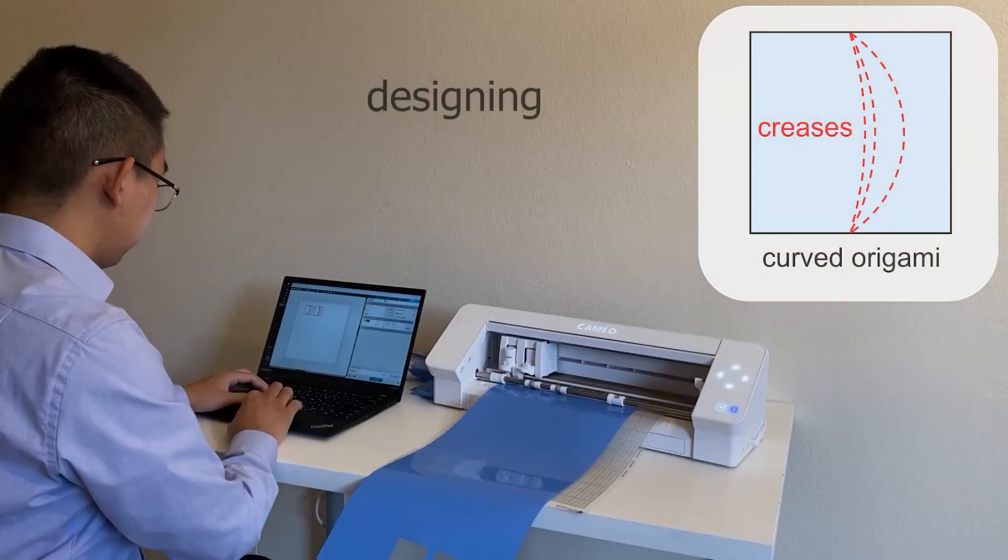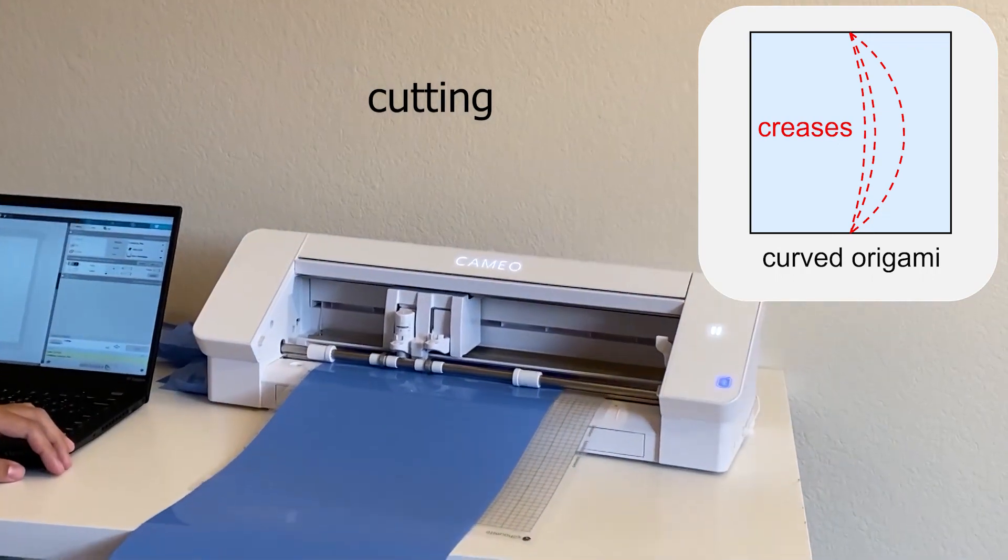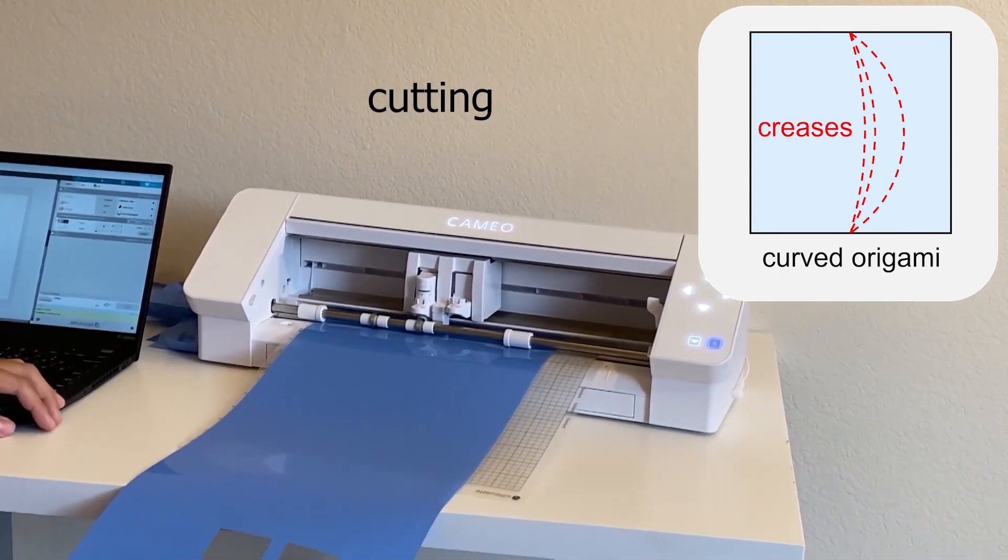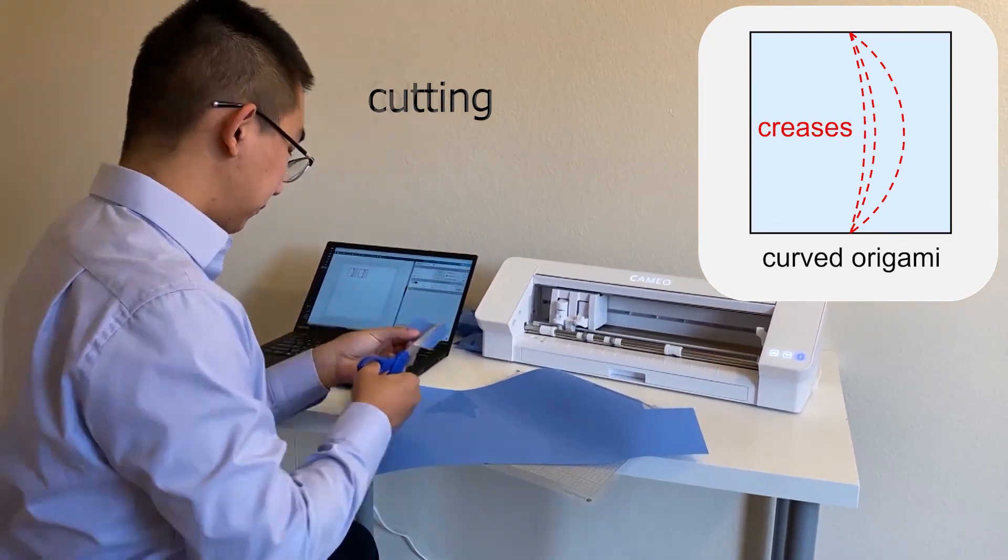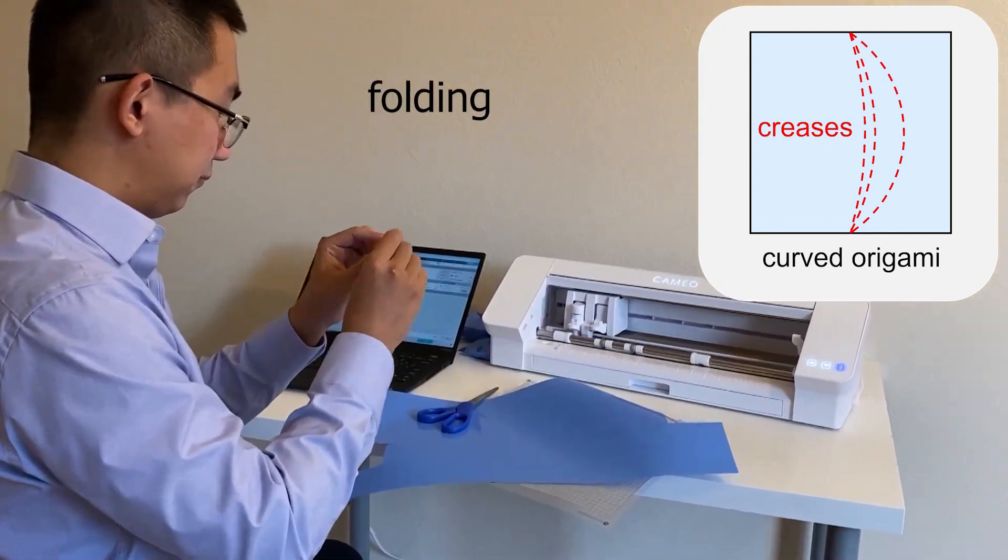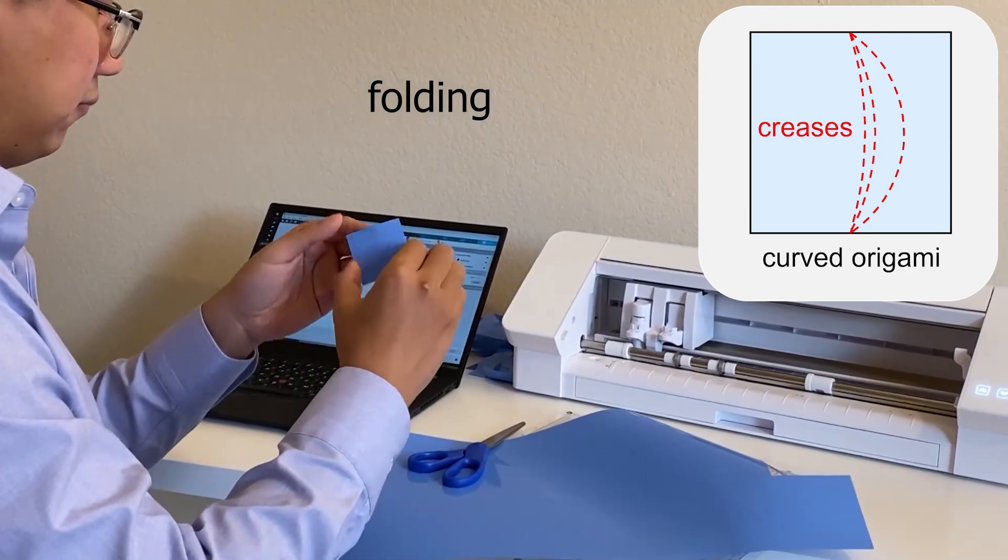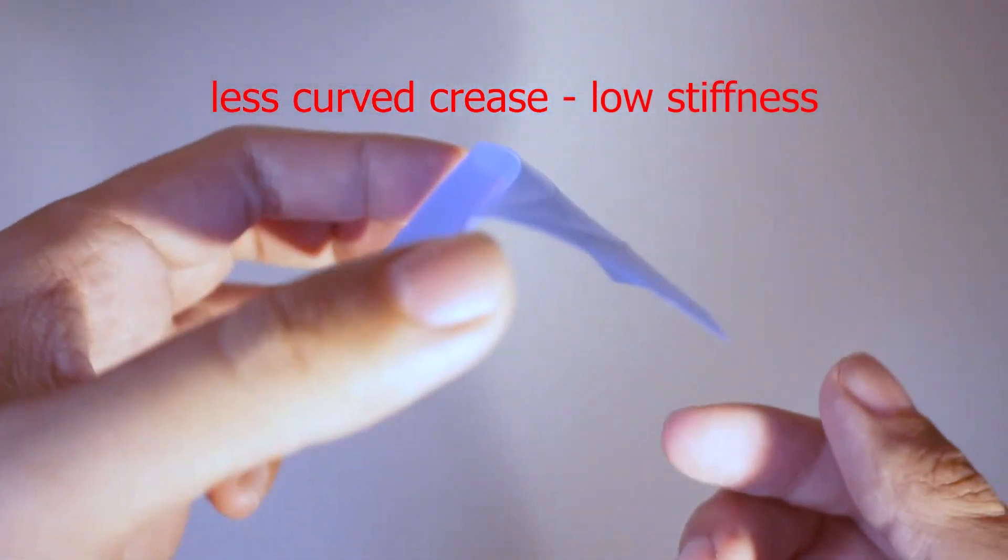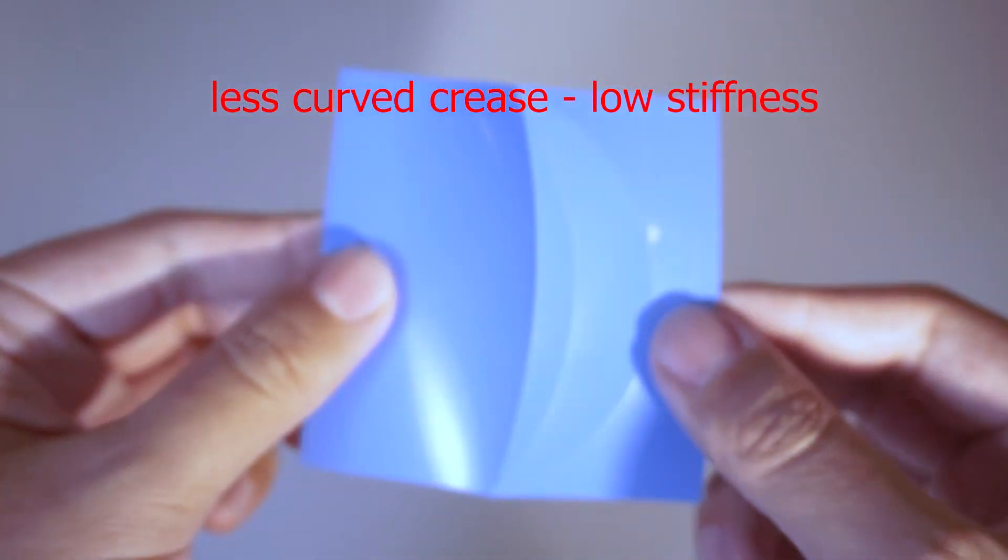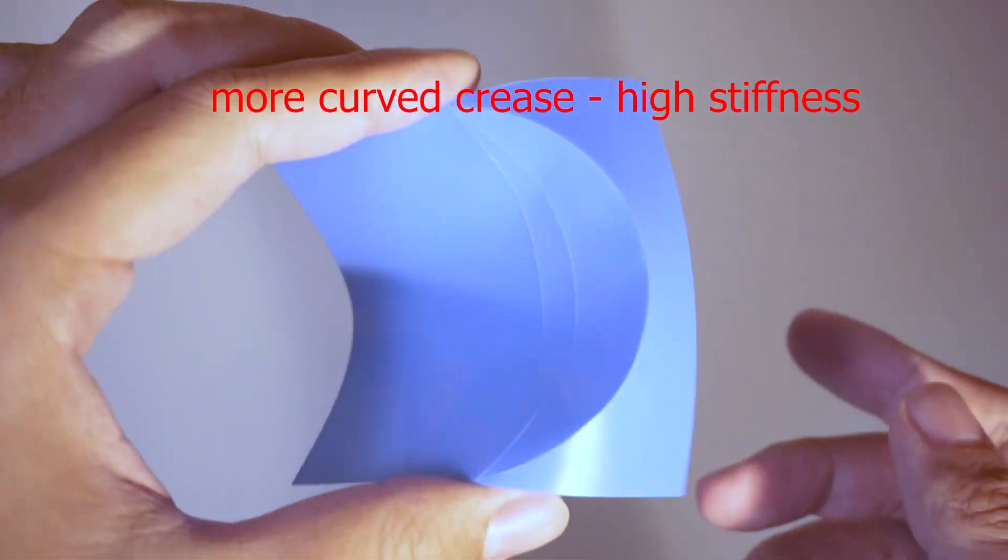To make stiffness manipulation possible in a smaller scale, we created curved origami patterns that allow us to manipulate stiffness from negative, zero, to positive by simply activating and deactivating the origami creases. Curved origami has lower stiffness with a less curved crease and a higher stiffness with a more curved crease.